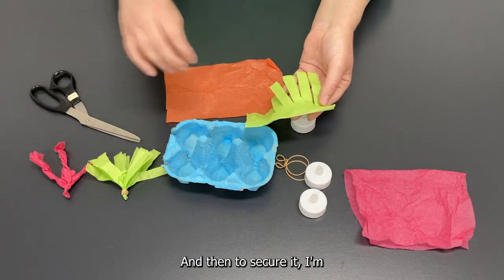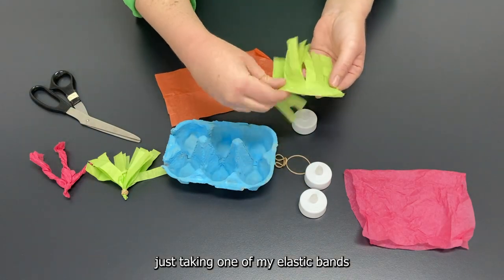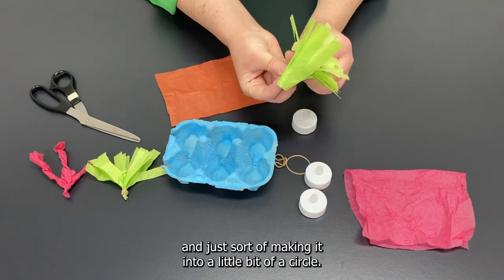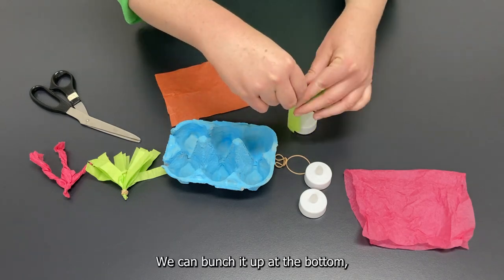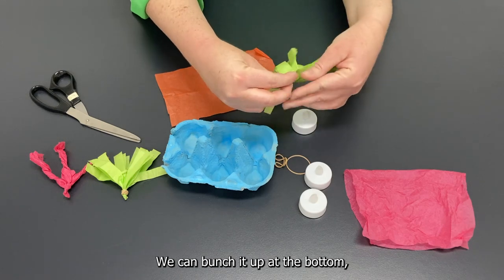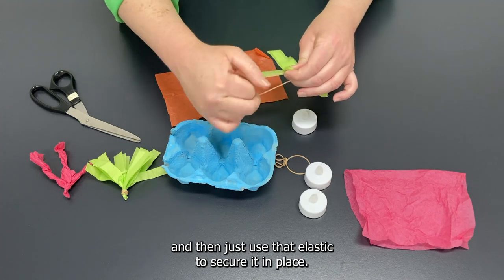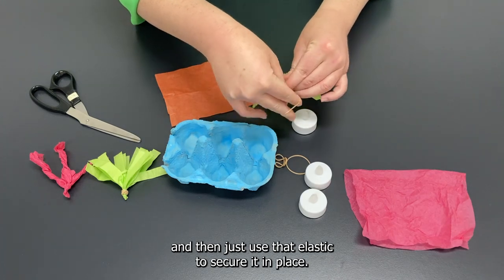And then to secure it I'm just taking one of my elastic bands and just sort of making it into a little bit of a circle. We can bunch it up at the bottom give it a little bit of a twist and then just use that elastic to secure it in place.